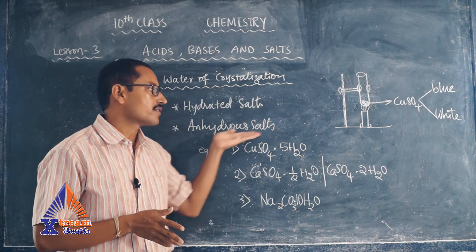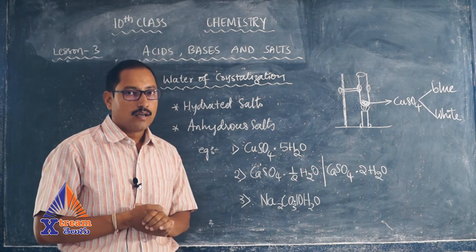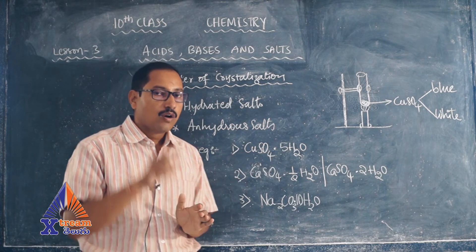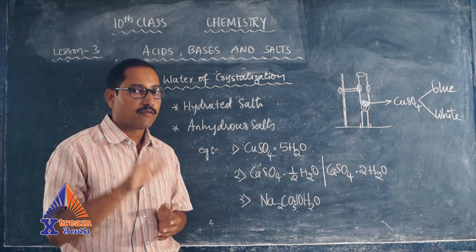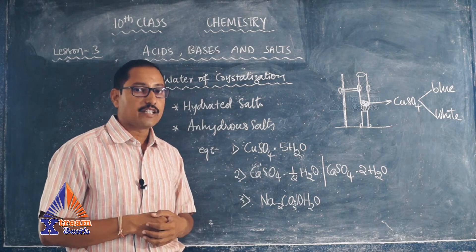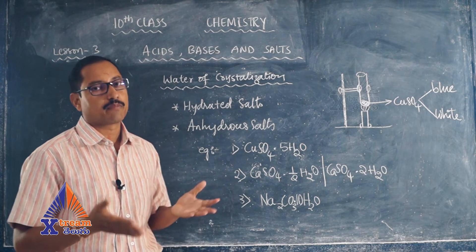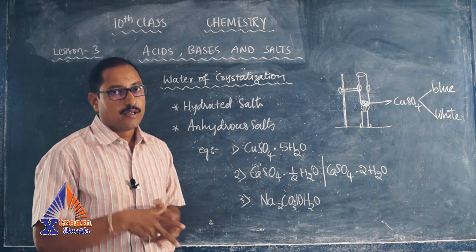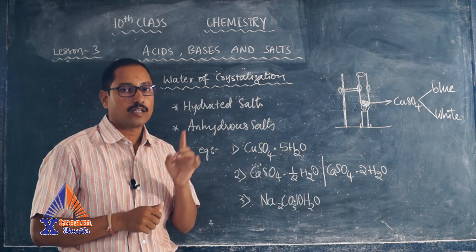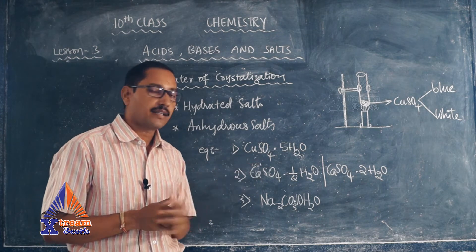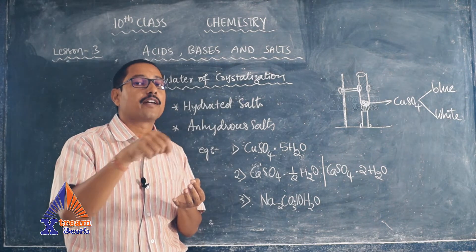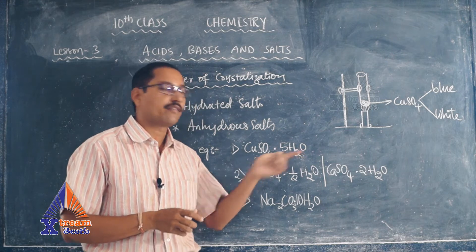Here are some examples of hydrated salts. The first one is copper sulfate (CuSO₄). Copper sulfate generally has five molecules of water in each crystal at room temperature. One copper sulfate molecule can accommodate five water molecules — that much space they can form in a crystal.